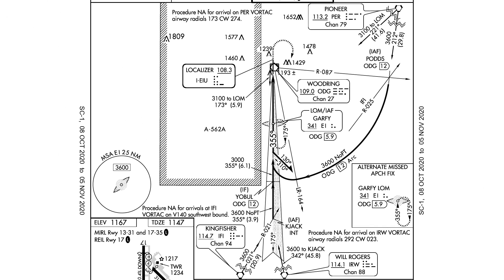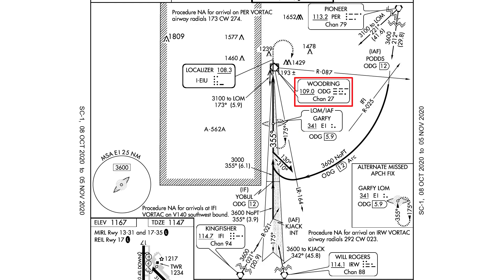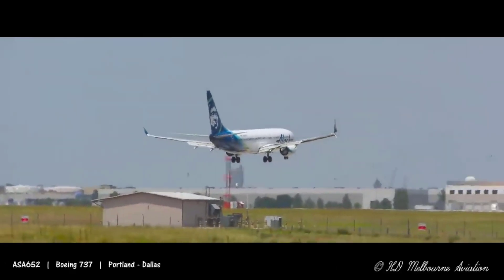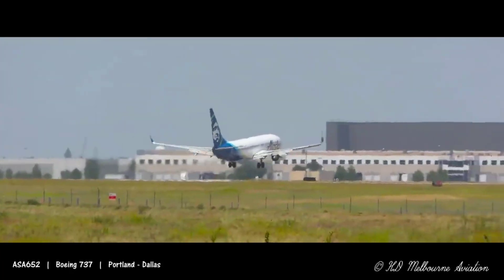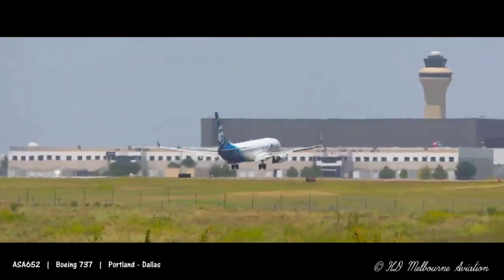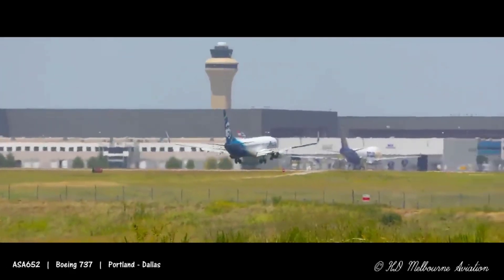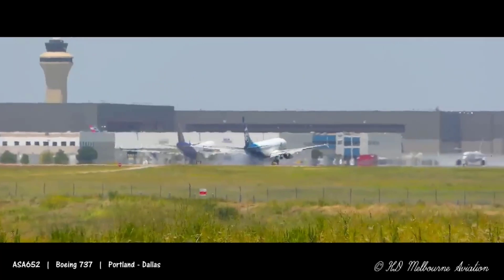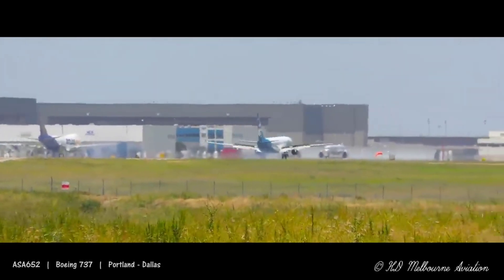We now need to look back at the plan view to find what the ODG nav aid is referencing. There are a couple of boxes: the Pioneer Vortac off to the northeast and the Garfi locator outer marker, but the one we need to use is the Woodring ODG VOR. As mentioned earlier, DME holding off a nav aid that's not located at the airfield can become incredibly disorienting if you haven't done proper mission planning.